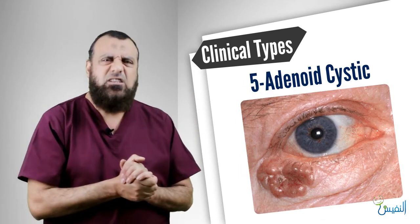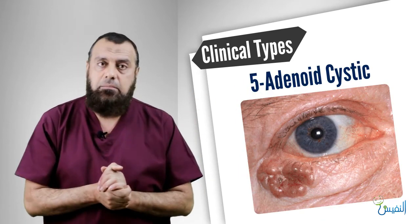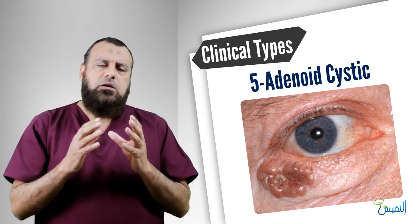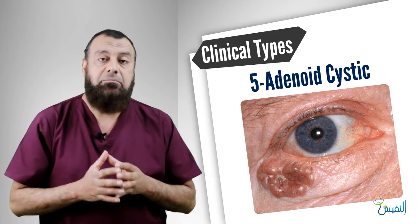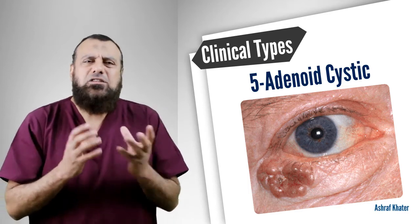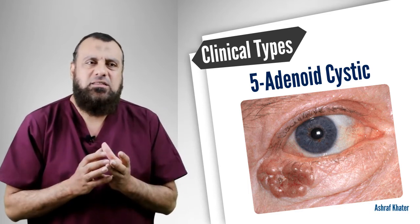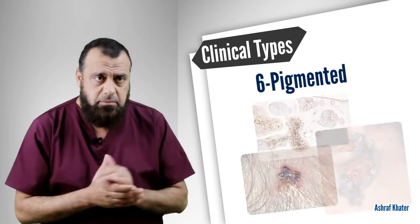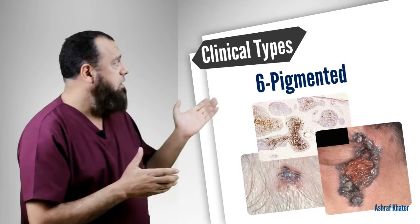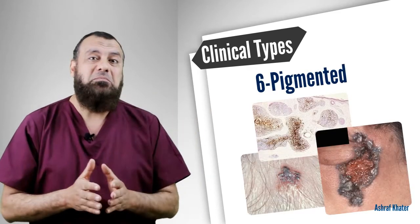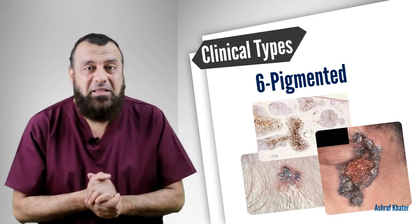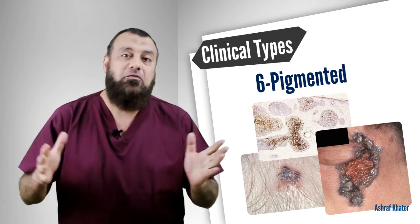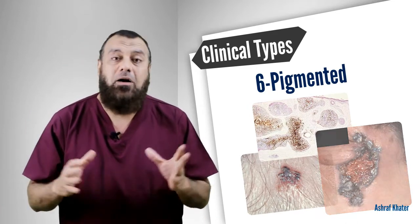Then there is the adenoid cystic type, where the beaded margin or margin nodules appear as pearly whitish structures. It is called the adenoid cystic type — just a descriptive term. Then there is the pigmented type, which may be mistaken for melanoma, and can only be differentiated by biopsy.